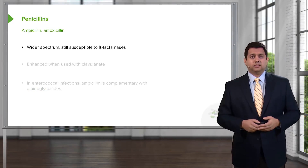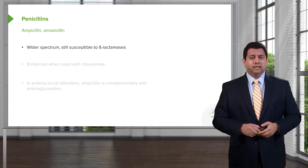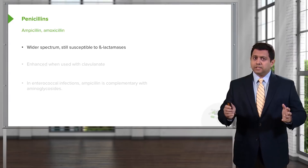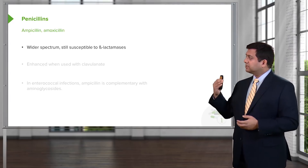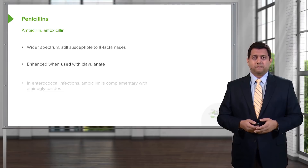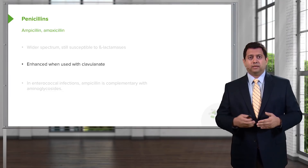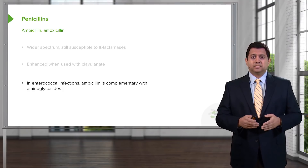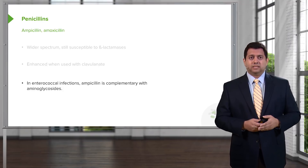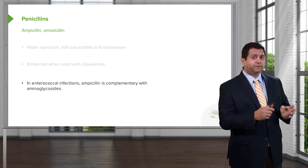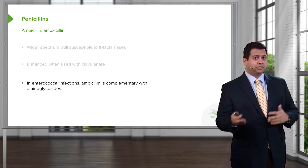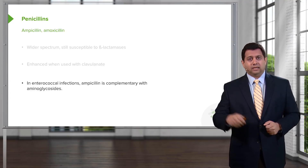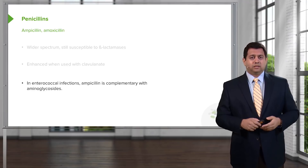Ampicillin and amoxicillin are wide-spectrum agents, but they are still susceptible to beta-lactamases. They are enhanced when combined with clavulanate. In enterococcal infections, ampicillin is complementary with aminoglycosides. So in enterococcal infections, we'll often use combinations like ampicillin and gentamicin because they work very well together. That's called bacterial synergy.